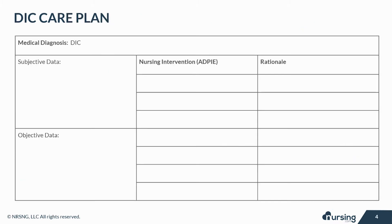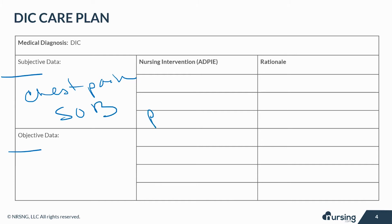Let's take a look at some of the subjective and objective data that your patient with DIC may present with. Subjective data are things based on your patient's opinions or feelings. For DIC, they may express chest pain, shortness of breath, pain in the affected limb, a headache, dizziness, or even double vision.